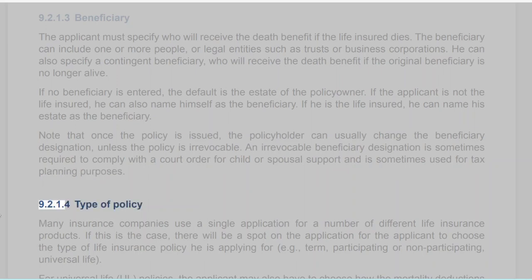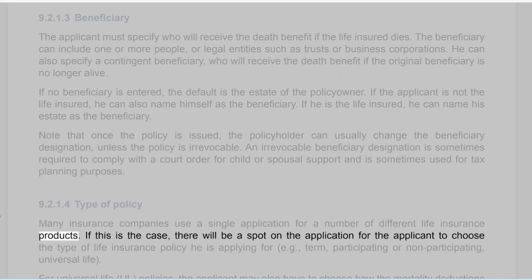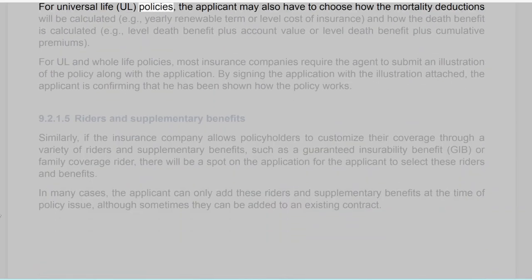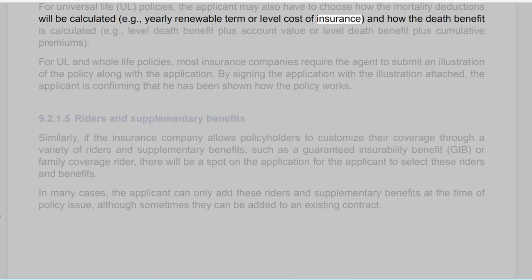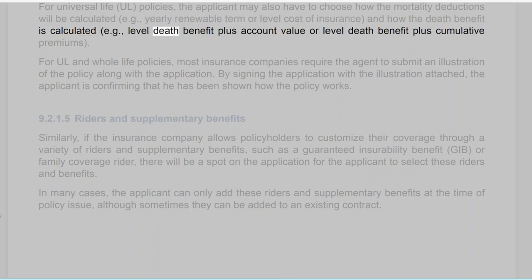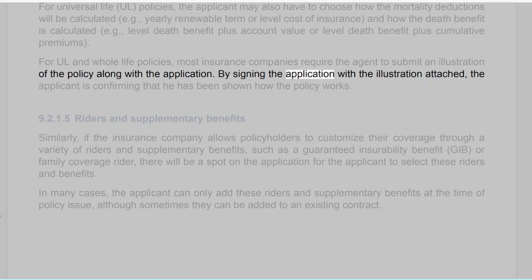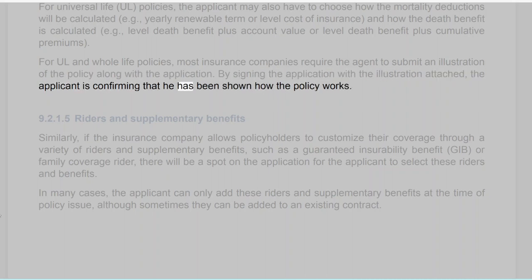Section 9.2.1.4: Type of Policy. Many insurance companies use a single application for a number of different life insurance products. If this is the case, there will be a spot on the application for the applicant to choose the type of life insurance policy — e.g., Term, participating or non-participating, universal life. For universal life policies, the applicant may also have to choose how the mortality deductions will be calculated (e.g., yearly renewable term or level cost of insurance) and how the death benefit is calculated (e.g., level death benefit plus account value or level death benefit plus cumulative premiums). For UL and whole life policies, most insurance companies require the agent to submit an illustration of the policy along with the application. By signing the application with the illustration attached, the applicant confirms that he has been shown how the policy works.